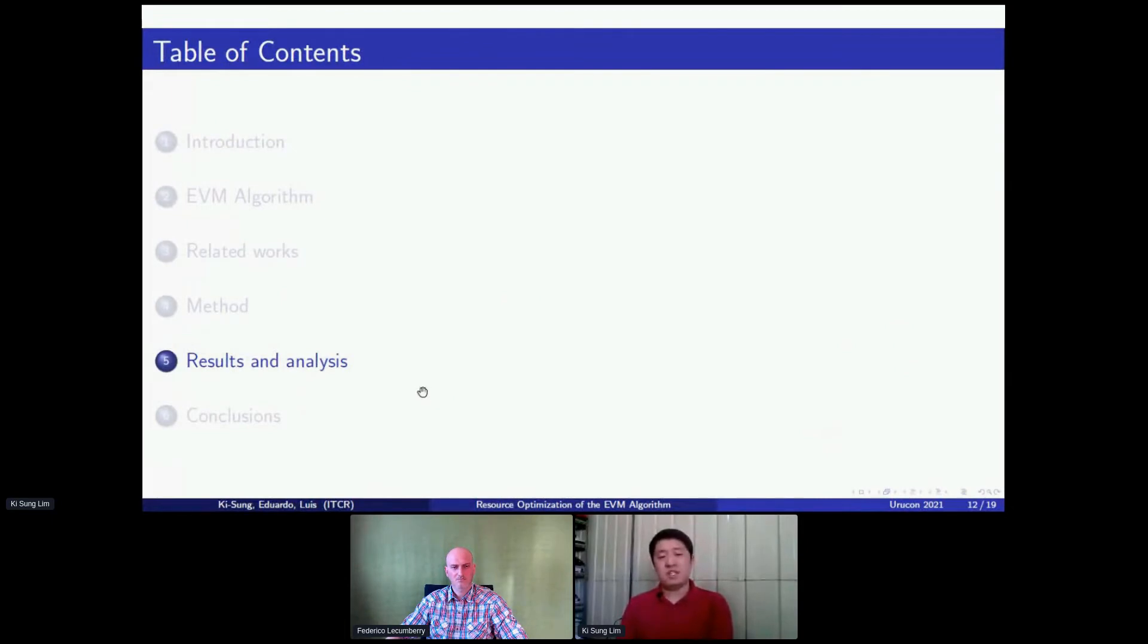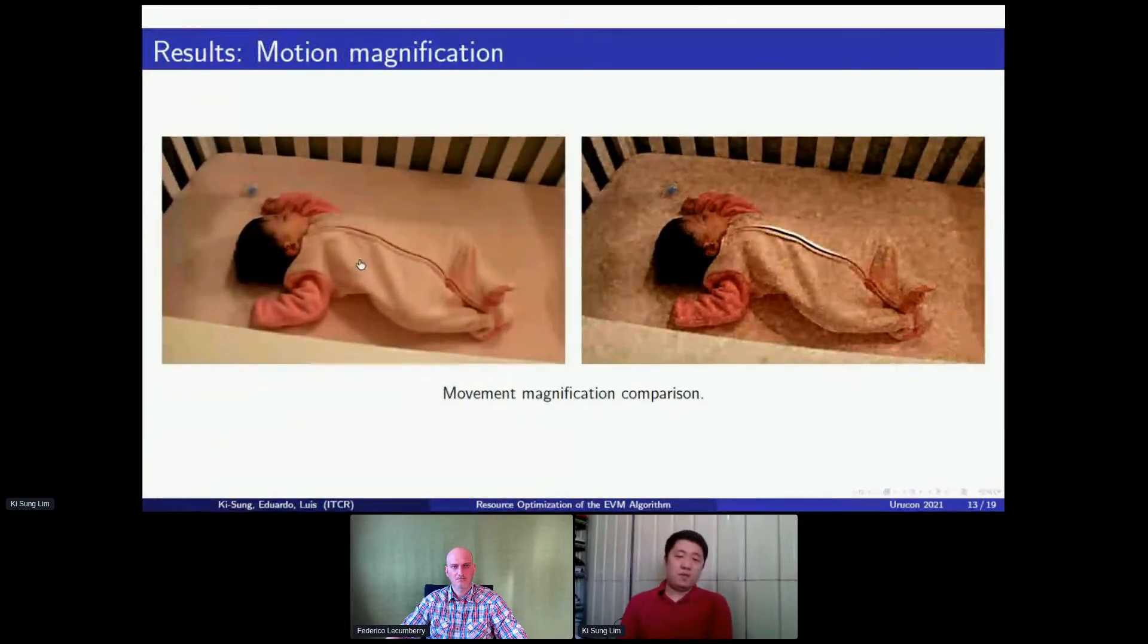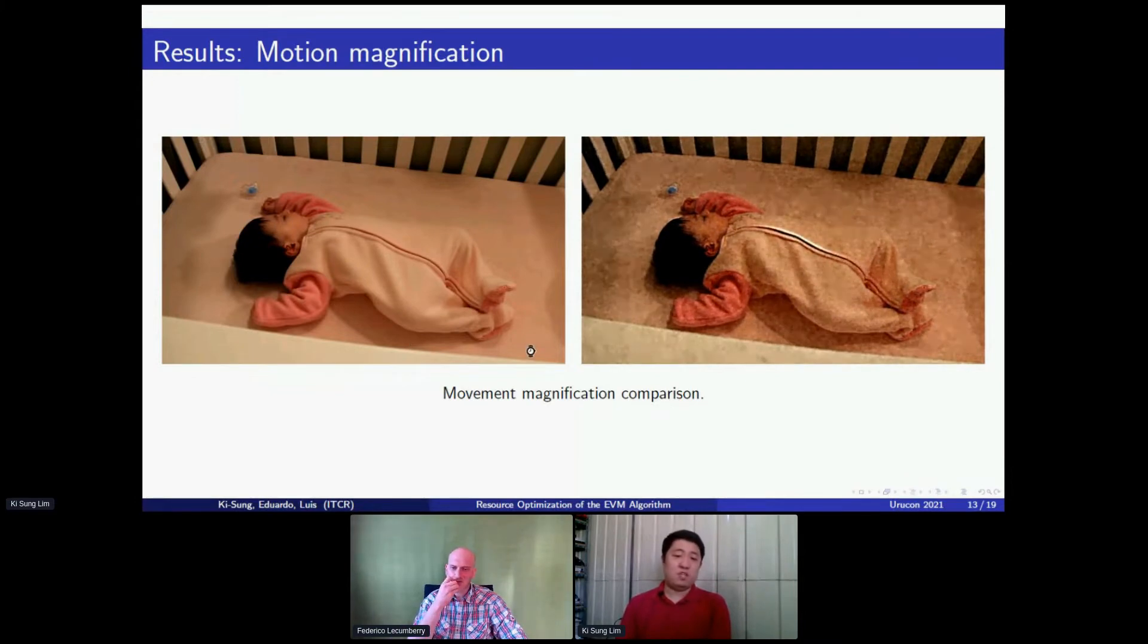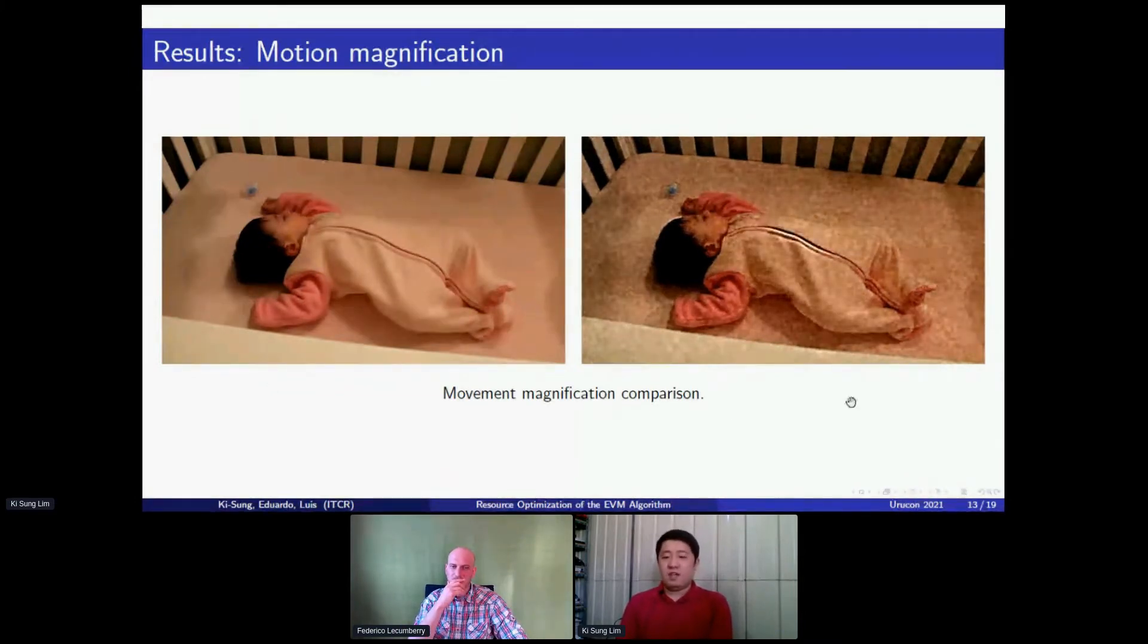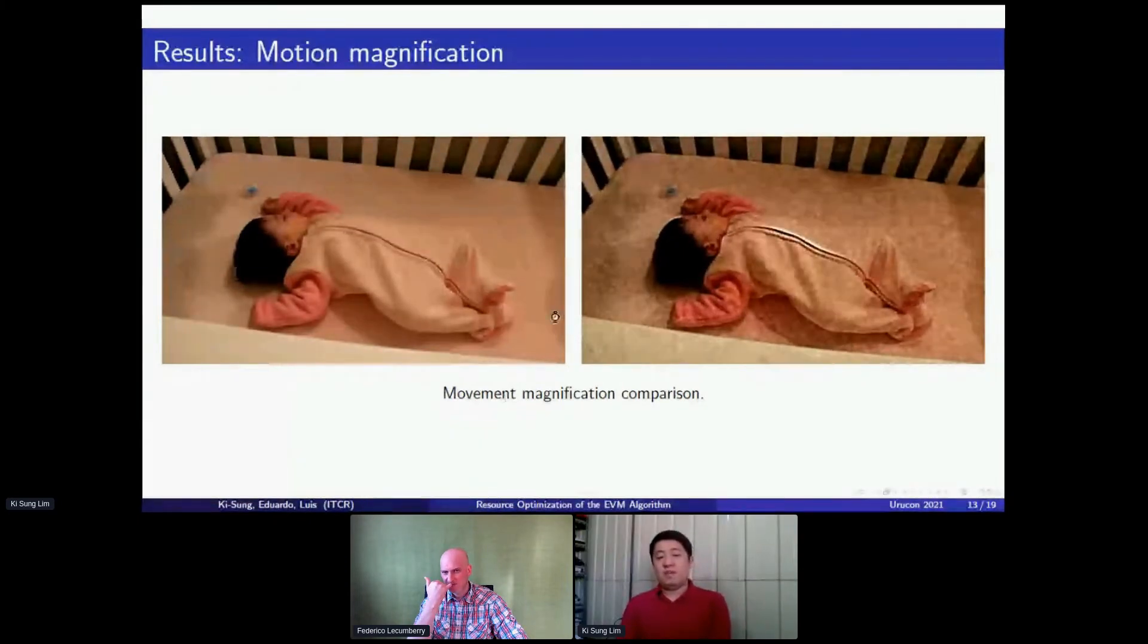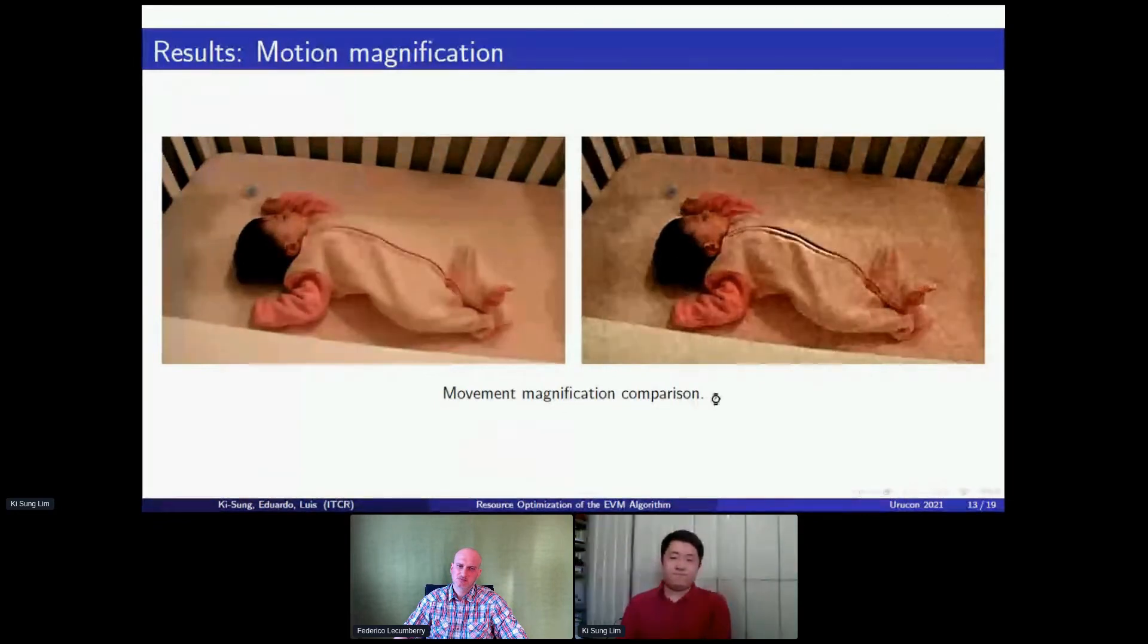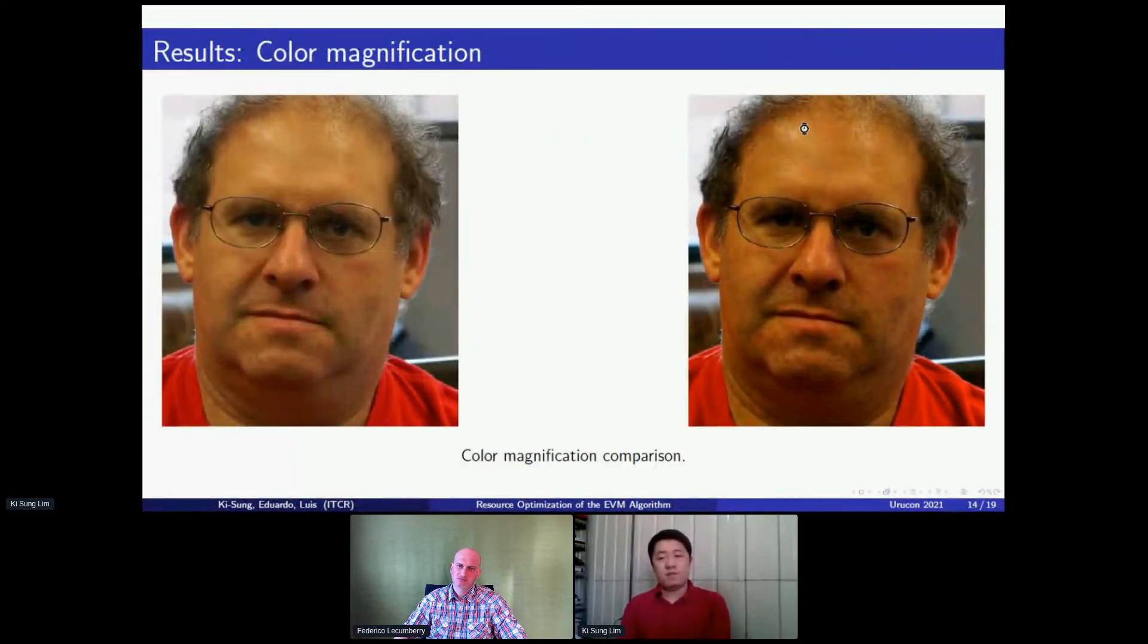Talking about the resource analysis that we obtained, the quality of the results of the motion magnification, we see that using the data that the base project that we used have, we can see that the motion of the baby that is sleeping and the subtle motion that he is making to breathe is magnified so we can see it more clearly. Also with the circulation of the blood to the face of this person, we can see that it changes the color so it can be translated to heart rate monitoring.